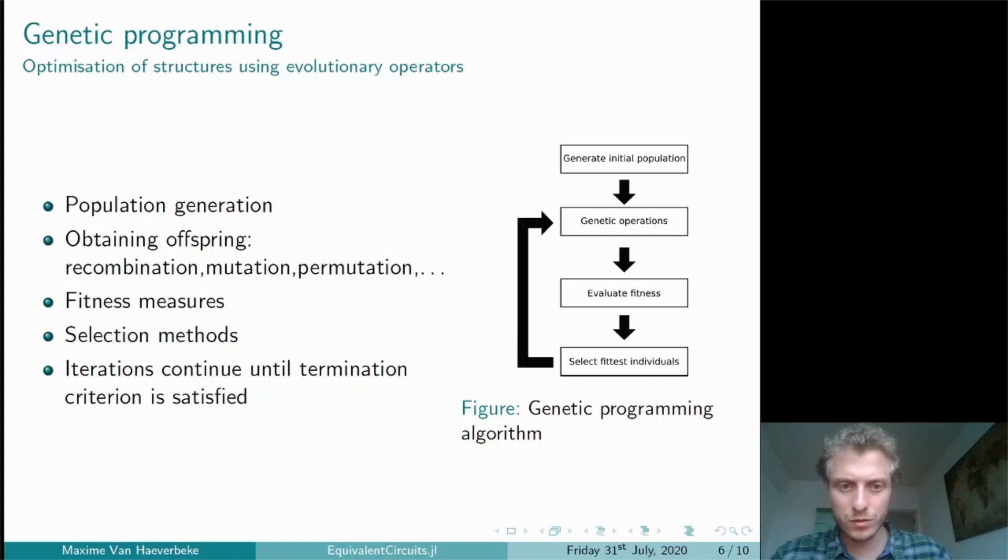The two most commonly applied genetic operations are recombination, where two individuals randomly exchange some of their components, and mutation, where some components of an individual are randomly manipulated to increase the diversity of the population.